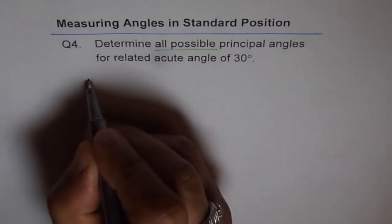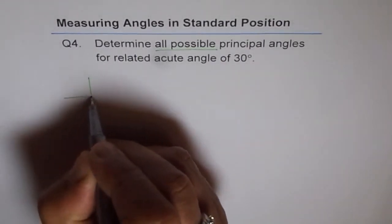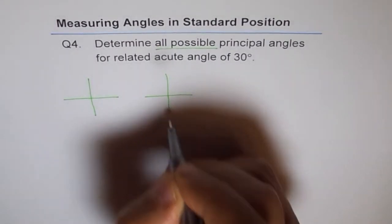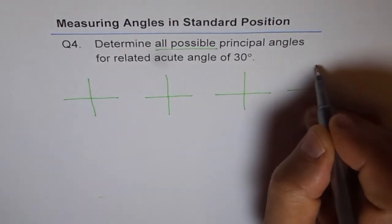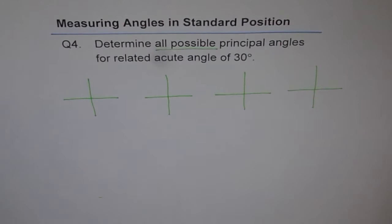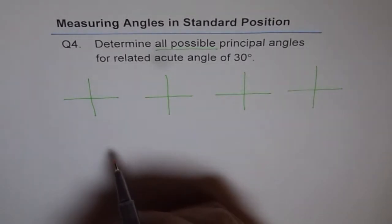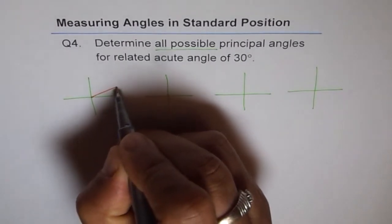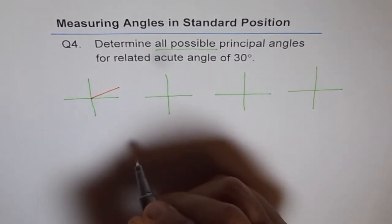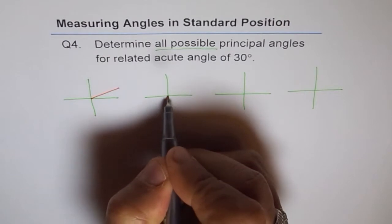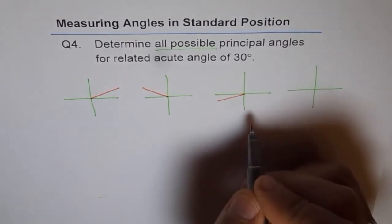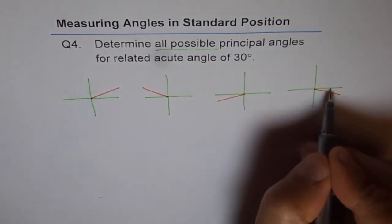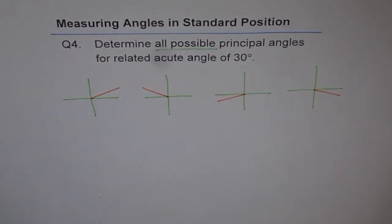Let's sketch them. I am making 4 of these since I know the answer — you may have to think and sketch to find all possible. For an acute angle of 30 degrees, we can have it in the first quadrant, also in the second quadrant, also in the third quadrant, and also in the fourth quadrant. So basically we have 4 combinations for a related acute angle of 30 degrees.